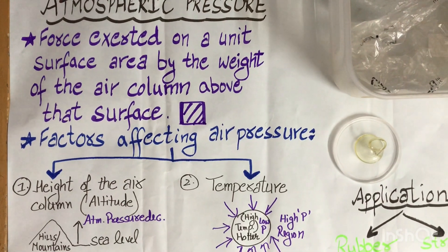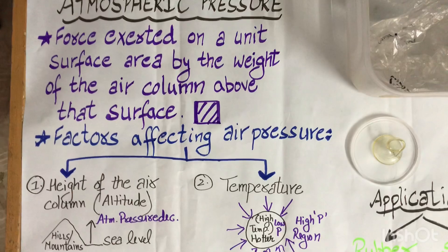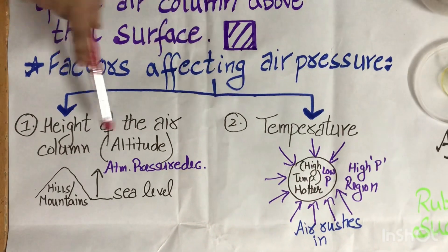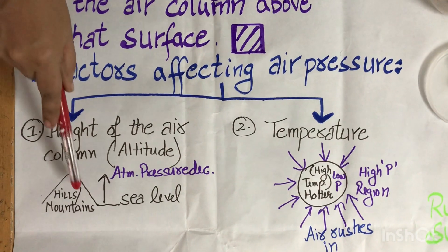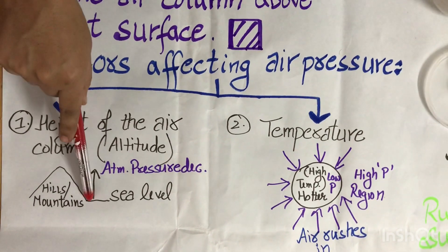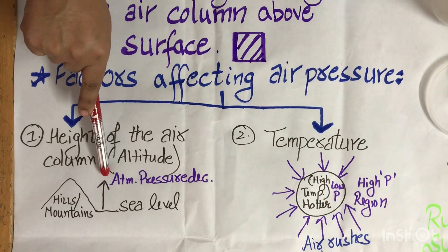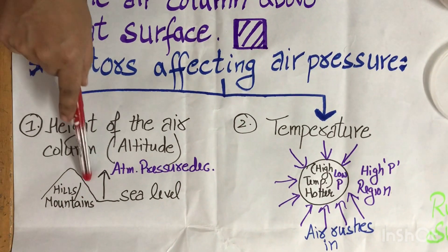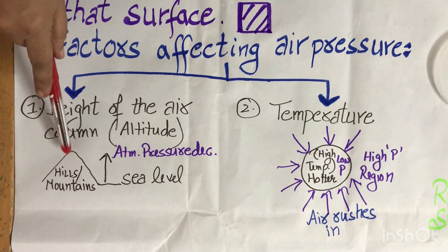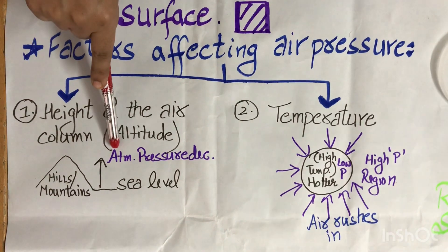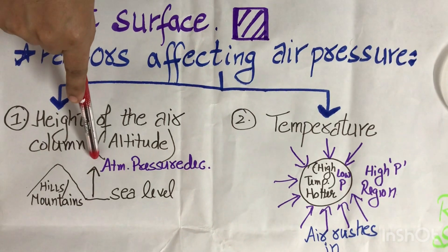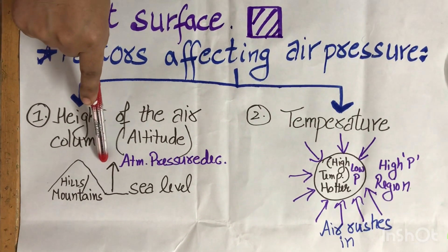We will see how atmospheric pressure exists with the help of certain activities, but before that let us study the factors affecting air pressure. There are two factors: one is the height of the air column. As height increases above sea level — as you go higher up on hills or mountains — the atmospheric pressure decreases. Due to this decrease, when travelling to higher altitudes, sometimes there is pain in the ear because the outside atmospheric pressure is decreasing while our body pressure is more, creating pressure on the eardrums.